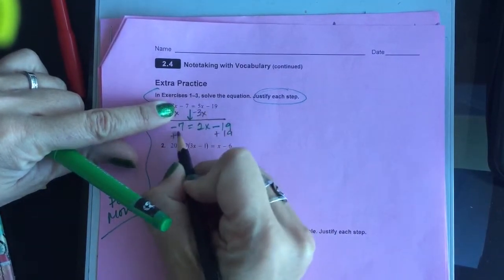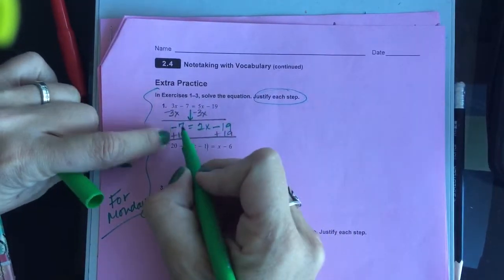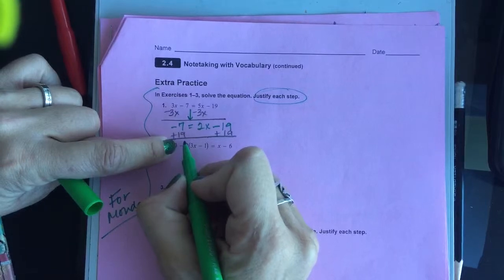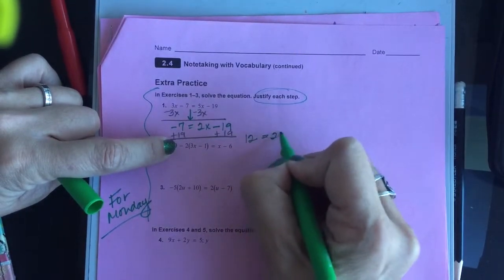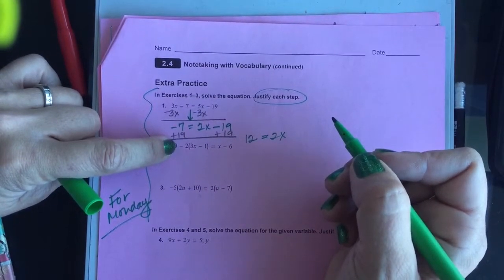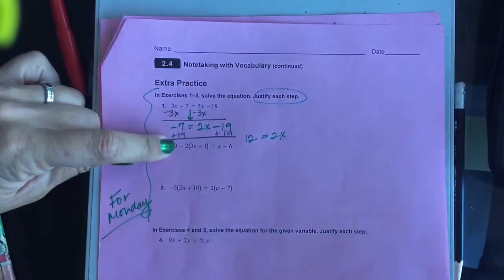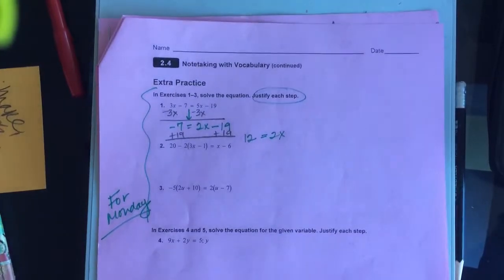From this point, I'm going to add 19 to both sides, and negative 7 plus 19 is going to give me 12. Malik, please stop talking. Negative 7 plus 19 is going to give me 12, and on the right-hand side is 2x.